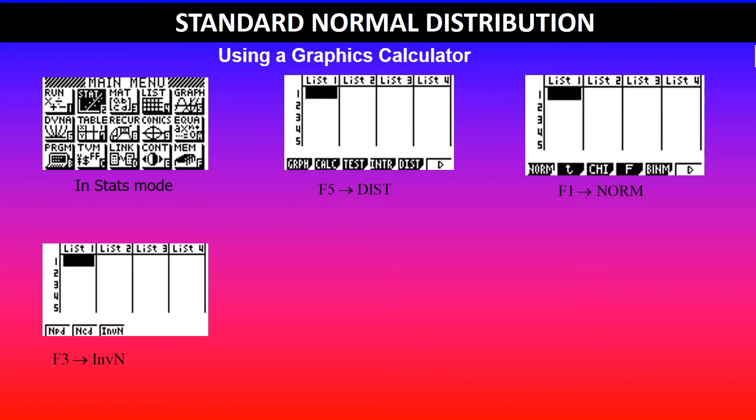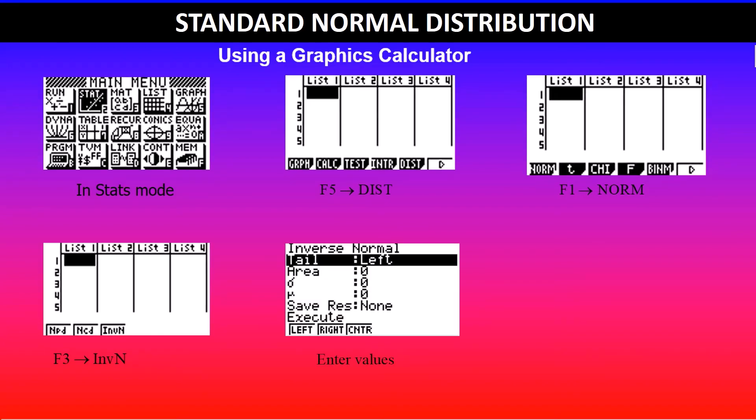In this case we are looking at F3 which is the inverse normal. Once you hit inverse normal it will ask you for the tail settings. It's either left, right or central.